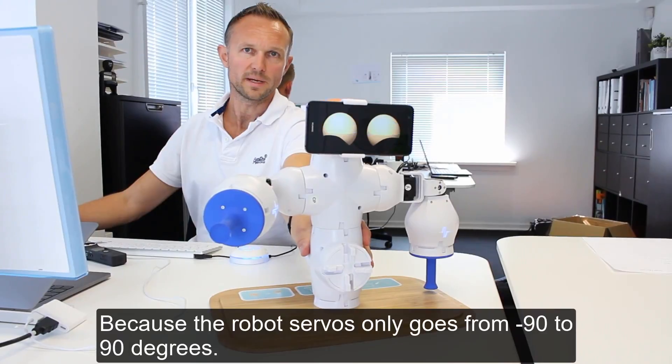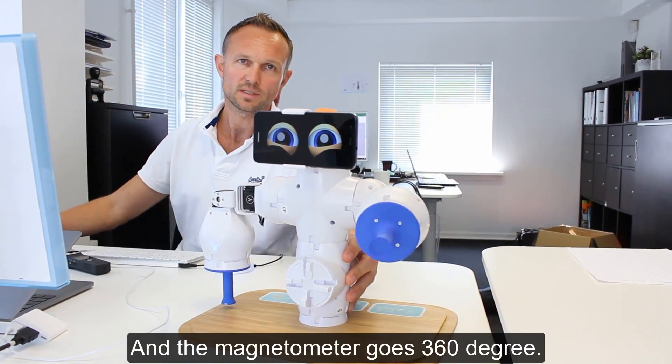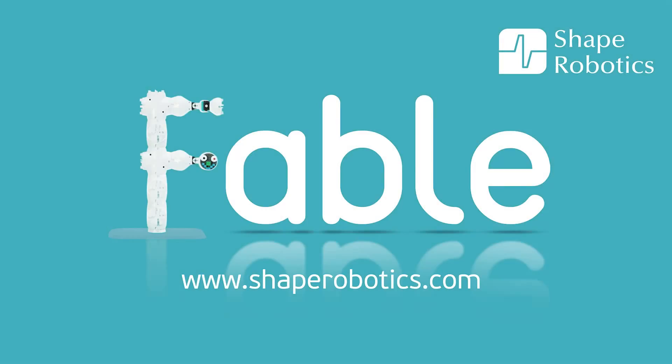Because the robot only goes from minus 90 to 90 degrees and the magnetometer goes 360 degrees.